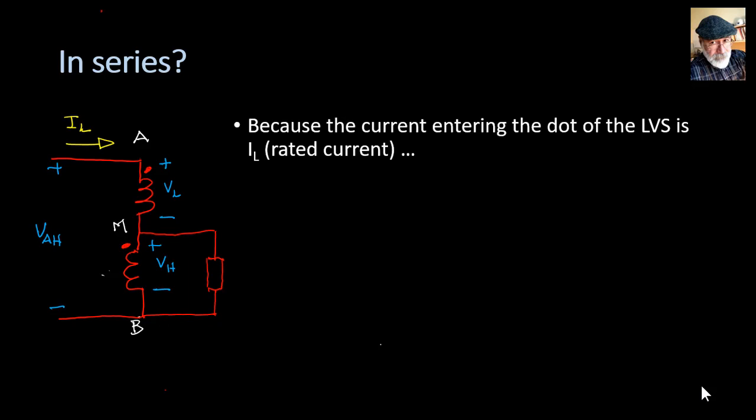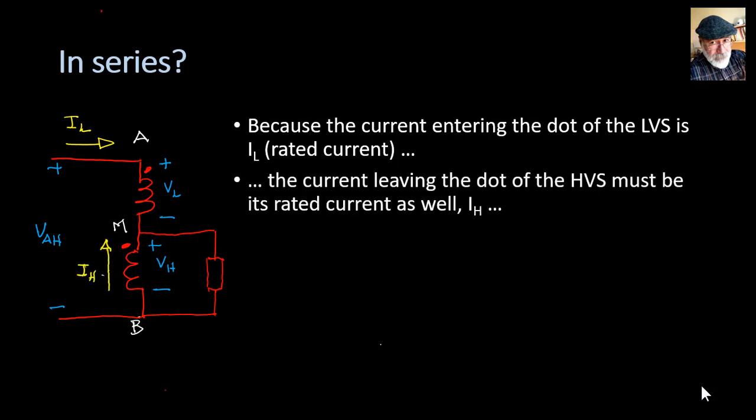But because the current entering the dot on the low voltage side is IL, the rated current, then the current leaving the dot on the high voltage side must be also the rated current of that side IH.